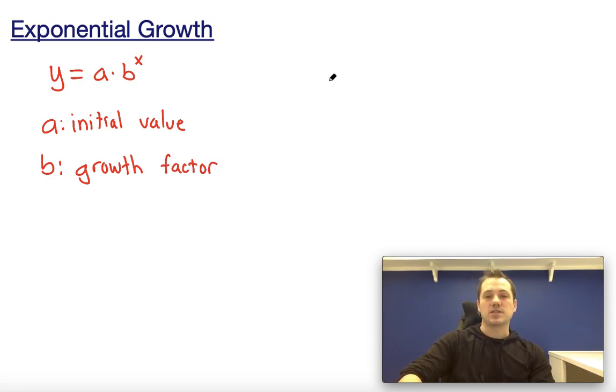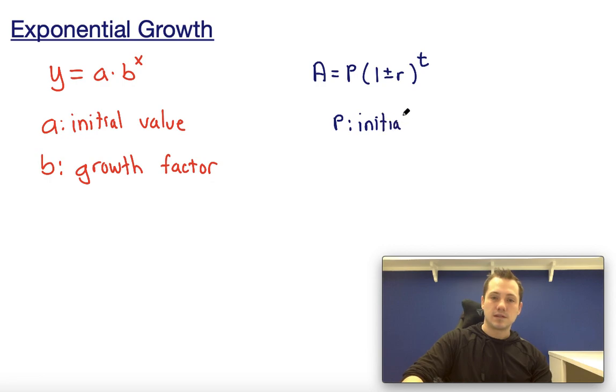We also have an exponential equation when we're dealing with percent increases or decreases. This would be A equals P times one plus or minus r raised to the t. In this, P represents your initial value and r represents your rate of change or your percent increase or decrease.